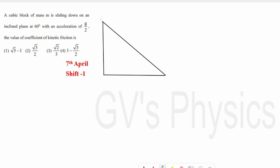We will see the last question. A cubic block of mass M slides down an inclined plane at 60° with acceleration g/2. We need to find the coefficient of kinetic friction. The inclined plane makes an angle of 60° and there is a block of mass M on it. We write the forces acting on the block.